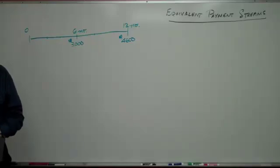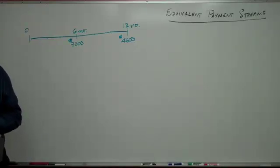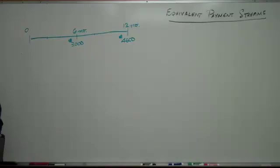With compound interest, the same thing: S is P times 1 plus I to the N, and P is S times 1 plus I to the minus N. So exactly the same techniques occur in both situations. That's what we want to look at today. I'm going to be working through a handout called Strategies for Solving Equivalent Payment Streams.